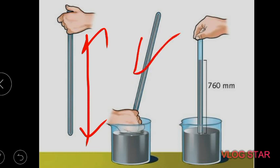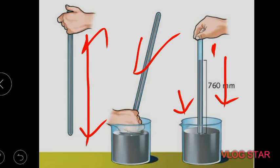He inverted the tube towards the jar and saw that some of the water had gone down into the jar — the water level decreased, but not all the water went down. He then thought about why some water was left, and realized that the water remaining is related to atmospheric pressure.